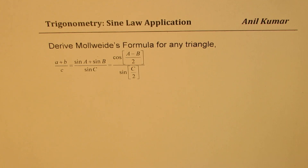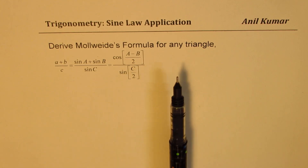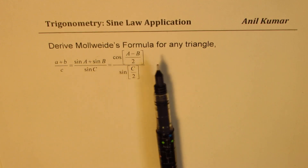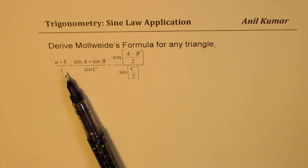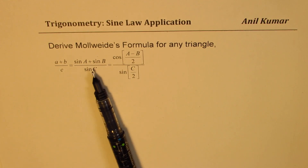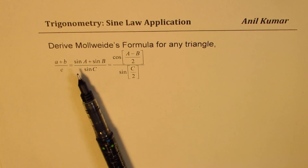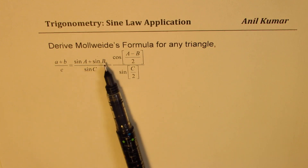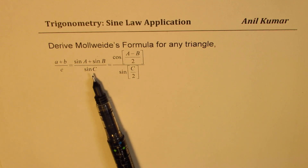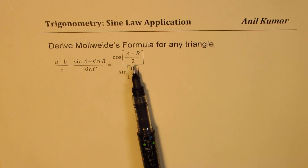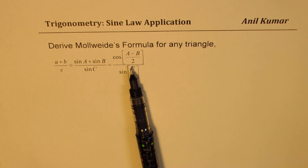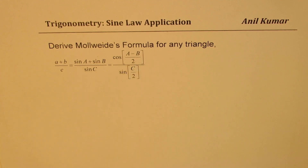We'll actually do it in two parts. First, we'll use the sine law to write (A + B) / C as (sin A + sin B) / sin C. Then we'll derive the formula from there. So it will be done in two steps.